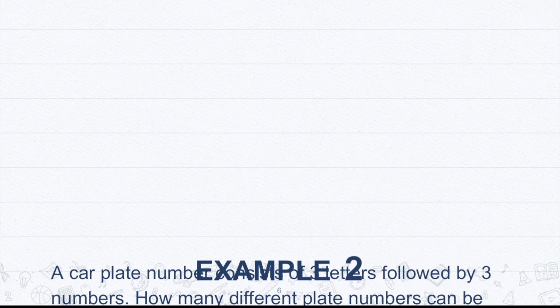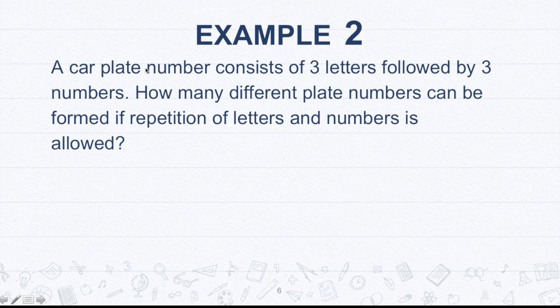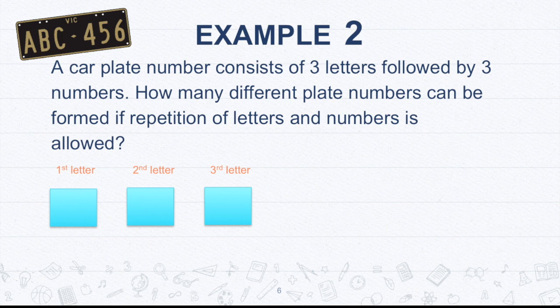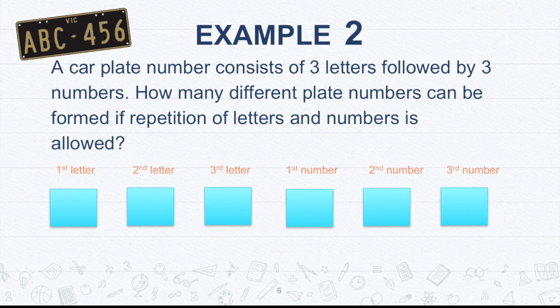Let's move on to the second example. A car plate number consists of three letters followed by three numbers. How many different plate numbers can be formed if repetition of letters and numbers is allowed? So this is an example of that plate number. So the first three would be letters and then followed by three numbers. So again, let's have those boxes.